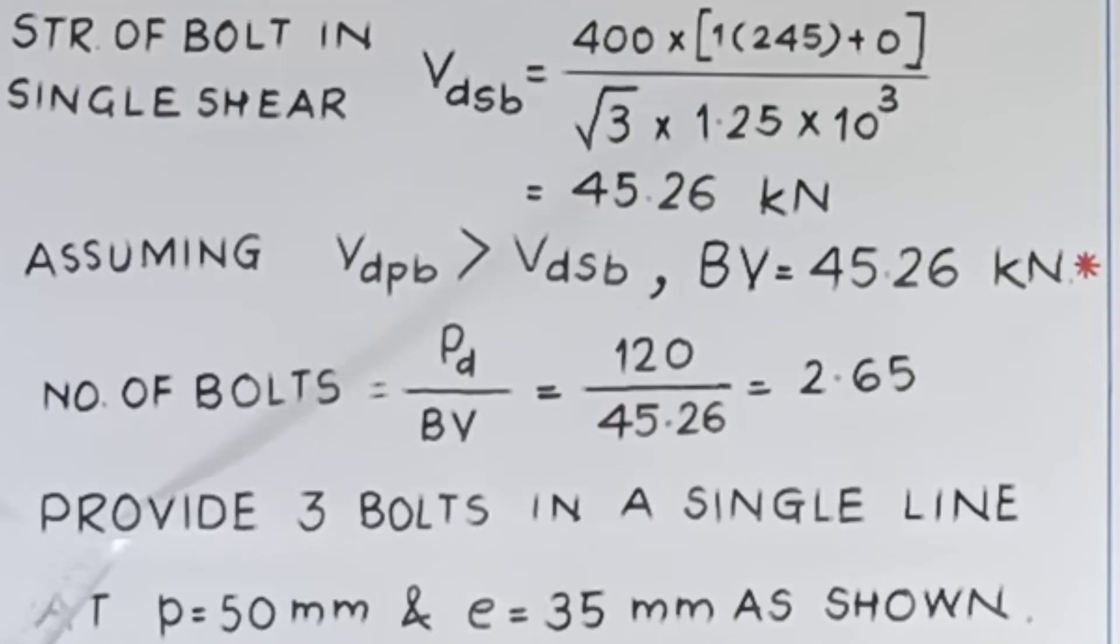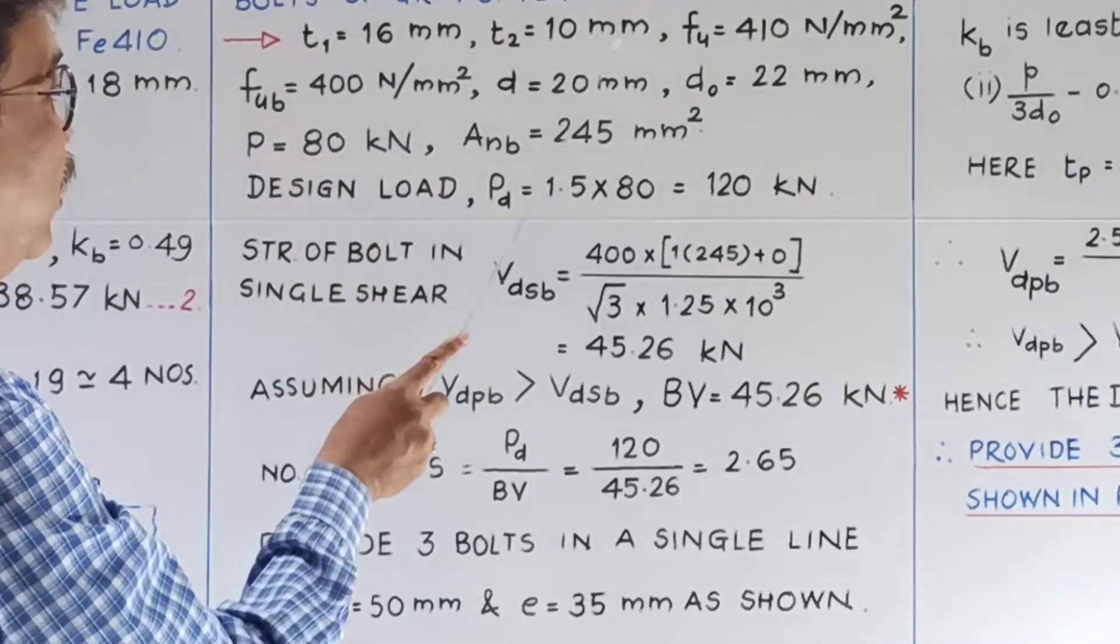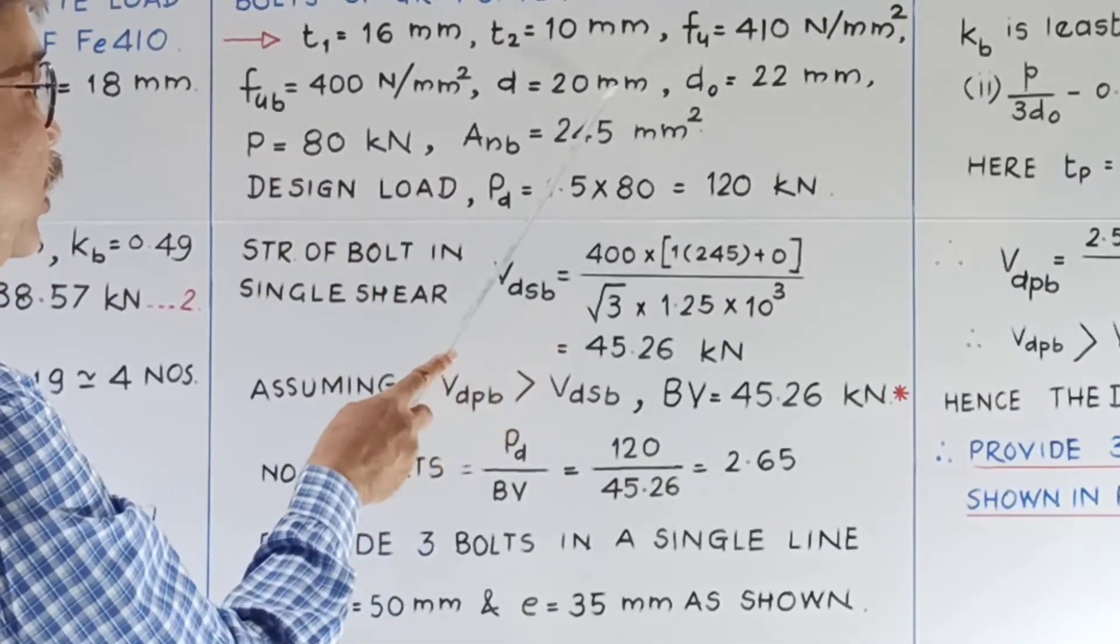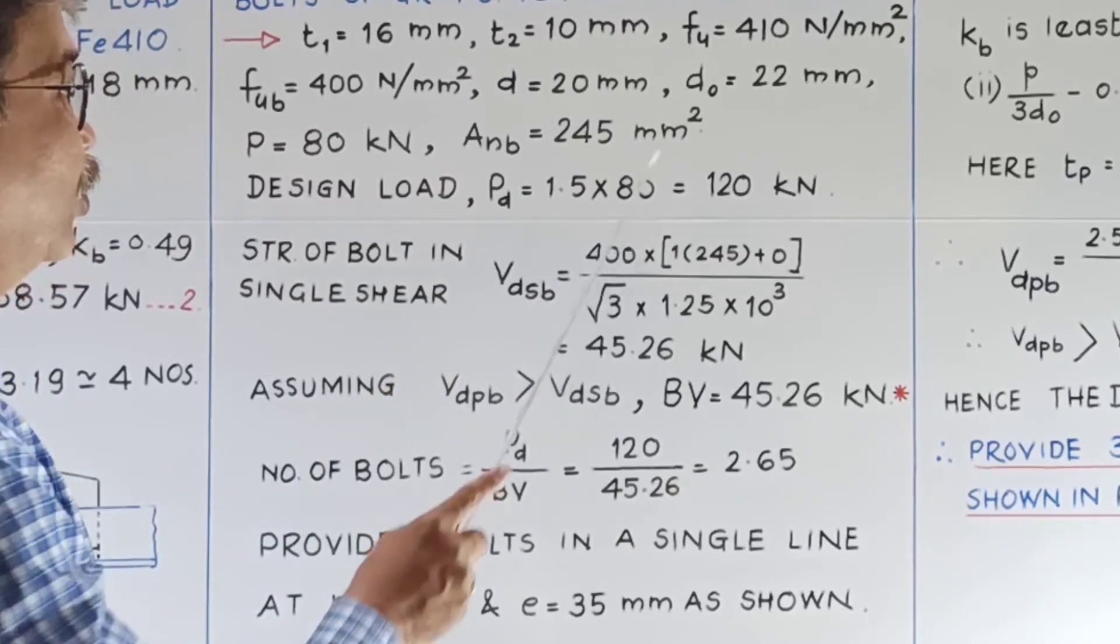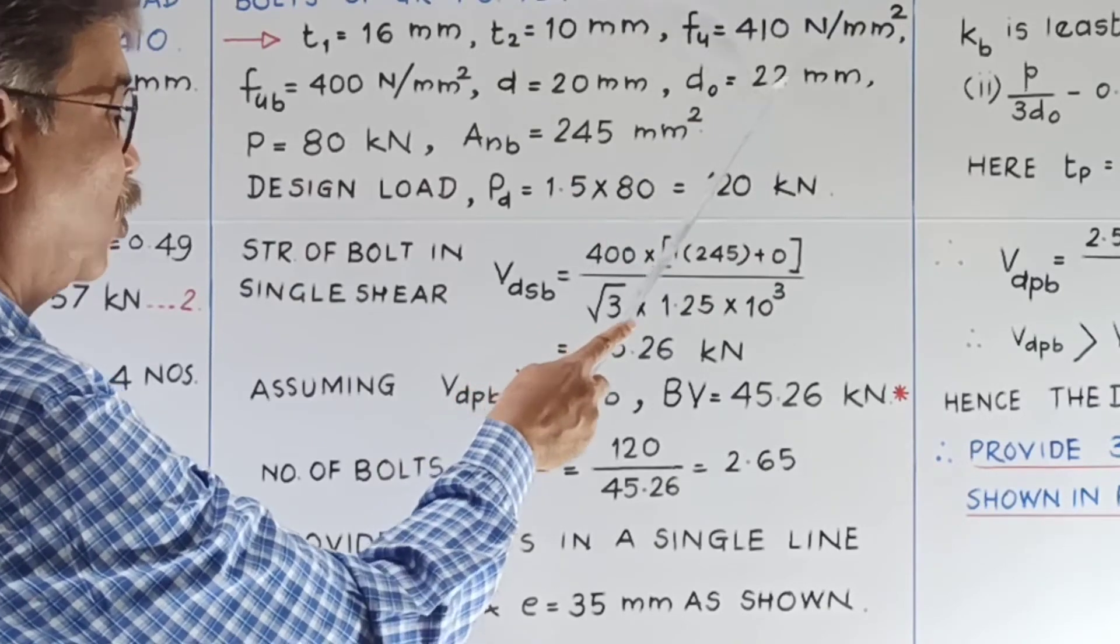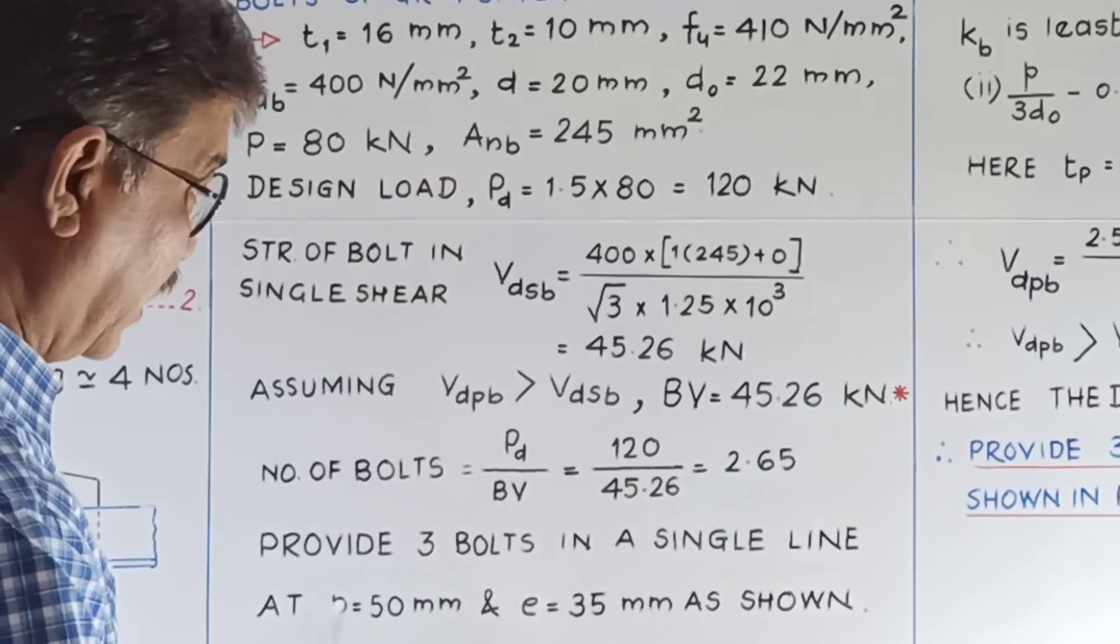So what is done? Provide 3 bolts in a single line as shown at pitch of 50 mm, edge distance of 35 mm as shown. Now how pitch is taken, minimum pitch, 2.5D, that is 2.5 into 20, so it will be 50. And 1.5 times D0, that is 1.5 into 22, it is 33, say 35.